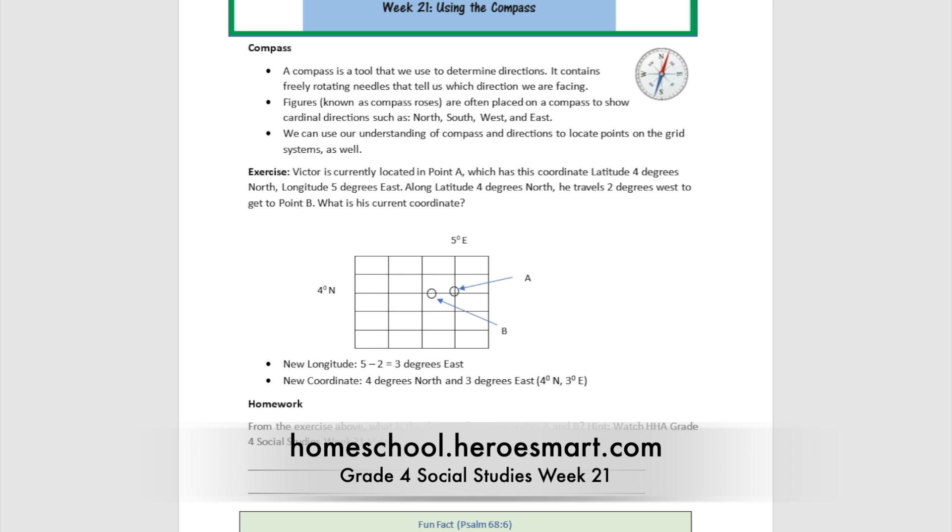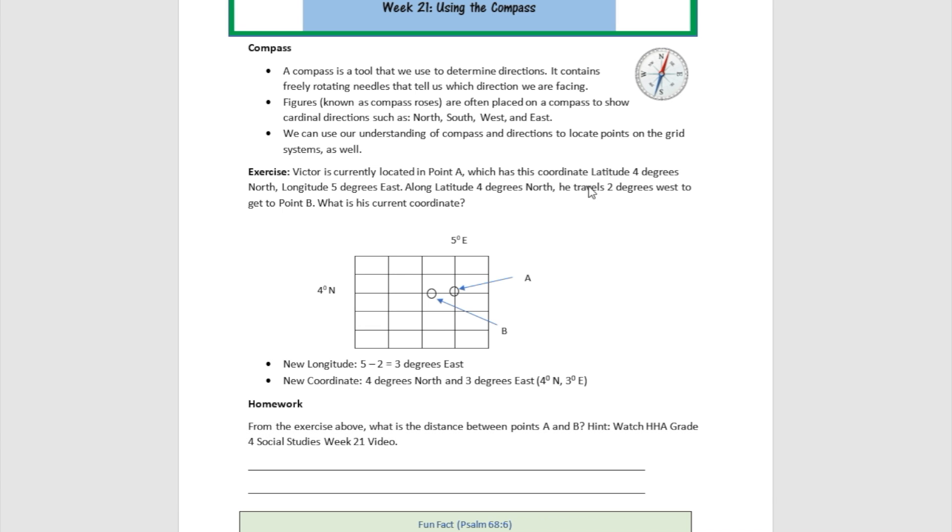Today we're going to be talking about how to use the compass. A compass is one of the tools that we talked about last week. It is a tool that is used to determine directions. It contains freely rotating needles that tell us which direction we are facing. A compass looks pretty much like that. It has four cardinal points: the north, the south, the west, and the east.